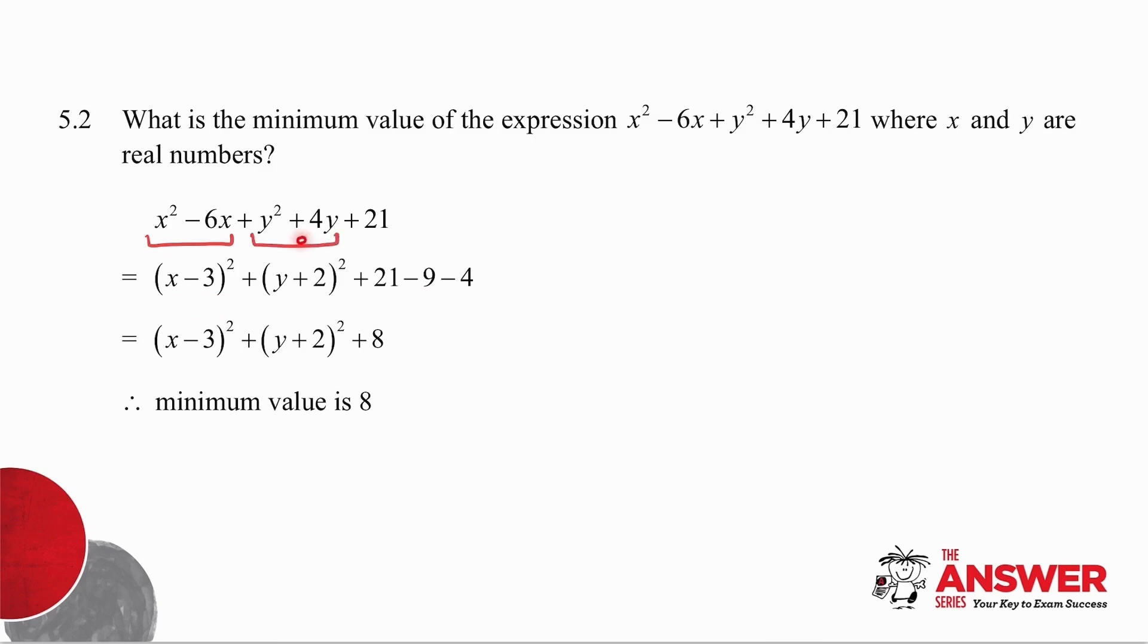Half the coefficient of Y is 2. So this becomes Y plus 2 all squared. Square the Y, twice the product of the 2. And if I square the last, I get a plus 4. So what do I have to do? I need to compensate for it by minusing 4. So if I were to multiply these brackets and collect like terms, I would get back to what I had there. 21 minus 9 minus 4 is 8.